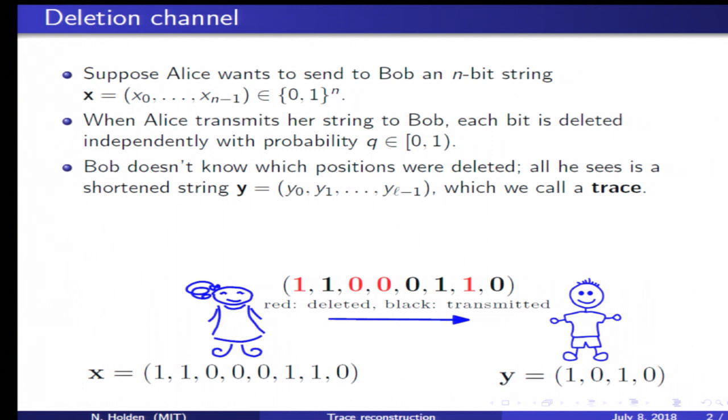Bob doesn't know the position of the bits which were deleted. The only thing he sees is a contracted string consisting of the not deleted bits. So in this case, it's equal to 1, 0, 1, and 0.